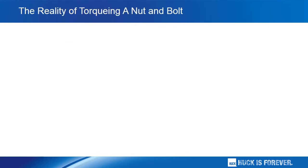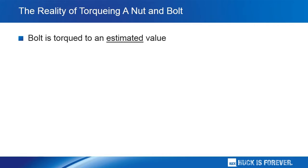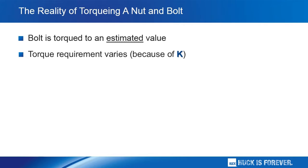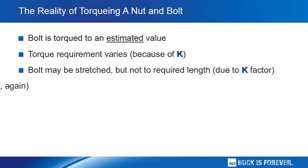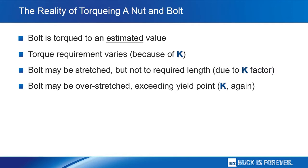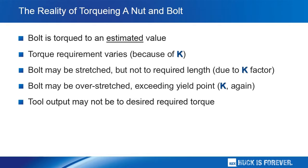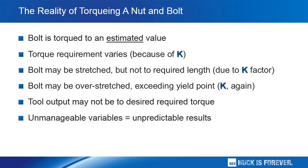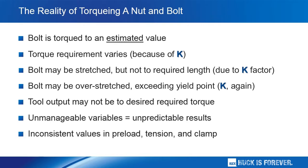Here's the real truth about torquing a nut and bolt. First of all, the bolt can only be torqued to an estimated value — there is nothing precise or certain about this value. There's that K element, friction, whose variability may result in a different torque requirement. The bolt may be understretched or overstretched as a result of the variation of K. At the same time, tool output may not be accurate in terms of achieving the required torque. When you have an unmanageable variable like K, there are going to be unpredictable results, and you are left with inconsistent values in preload, tension, and clamp — inconsistencies that can result in the failure of a joint.